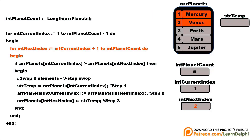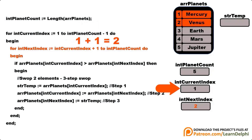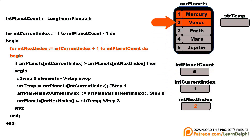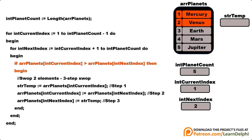Inside the outer loop we have an inner for loop. The inner loop starts at the current index plus 1 — so when the current index is 1, it starts at index 2 and finds Venus. The inner loop's upper limit is the size of the array, so it loops from 2 to 5. An if statement inside the inner loop compares the names at index 1 and index 2. If the first value is greater than the next value, you perform a swap. Mercury is not greater than Venus, so no swapping is necessary.